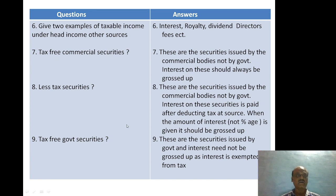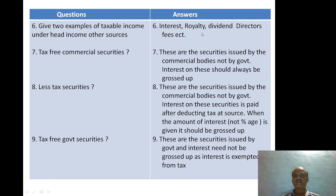Give two examples of taxable income under the head Income from Other Sources. Examples include: interest income, royalty income, dividend income, and director's fees. These are all examples of incomes taxable under the head income from other sources.